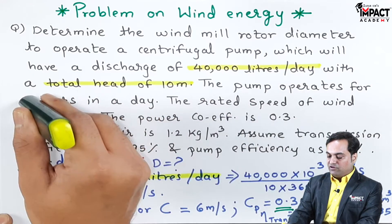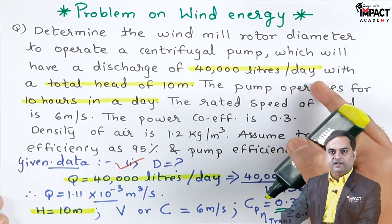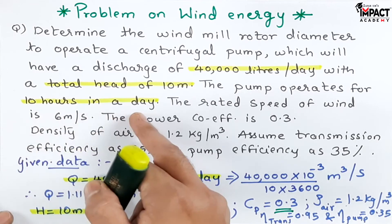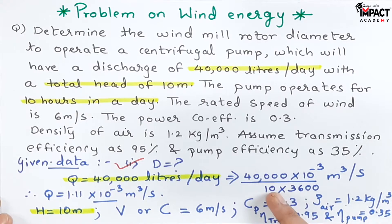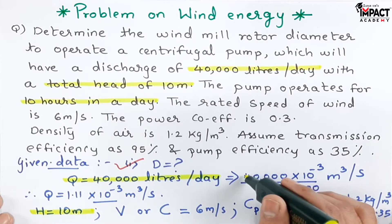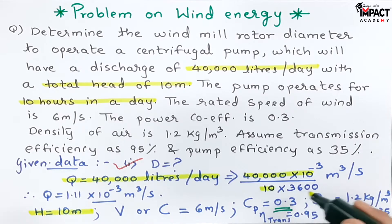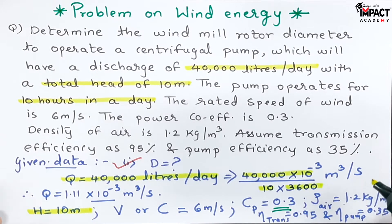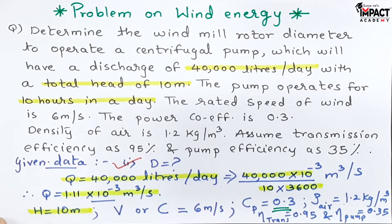The pump operates for 10 hours in a day — this condition is important. The pump delivers 40,000 liters per day but runs for only 10 hours, not 24. So 40,000 is divided by 10 to get liters per hour, multiplied by 10⁻³ for meter cube per hour, then divided by 3600 for meter cube per second. The result is Q = 1.11 × 10⁻³ m³/s.